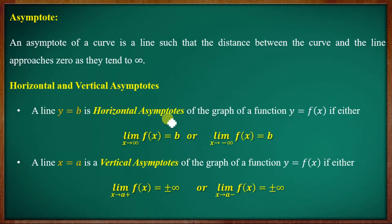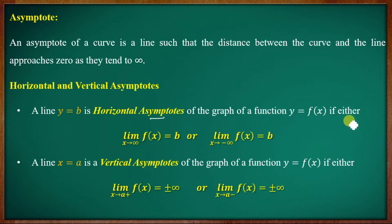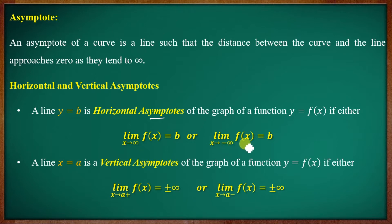The horizontal asymptote: the line y equal to b is the horizontal asymptote of the graph of a function y equal to f of x, if either the limit as x tends to infinity of f of x equals b, or the limit as x tends to minus infinity of f of x equals b.